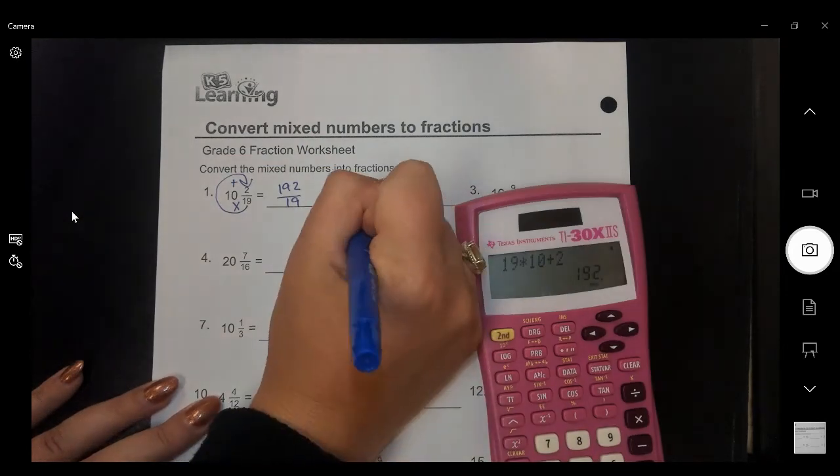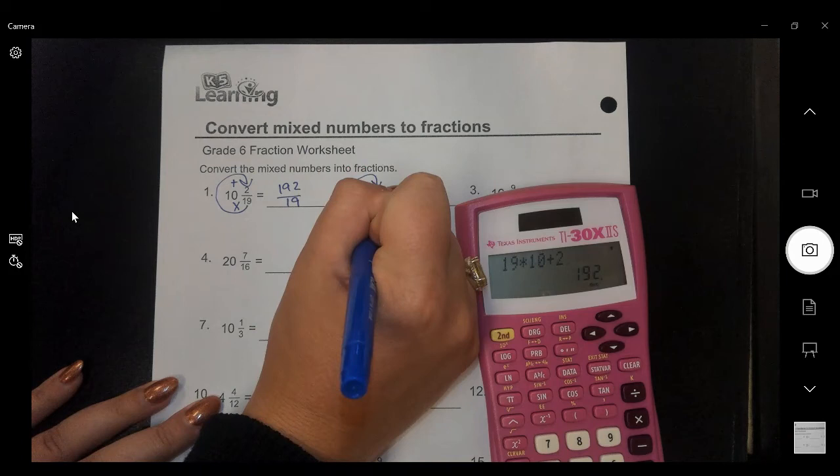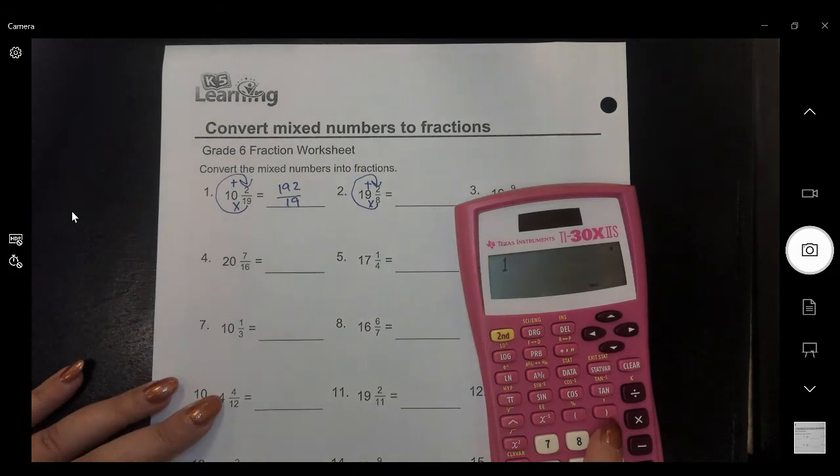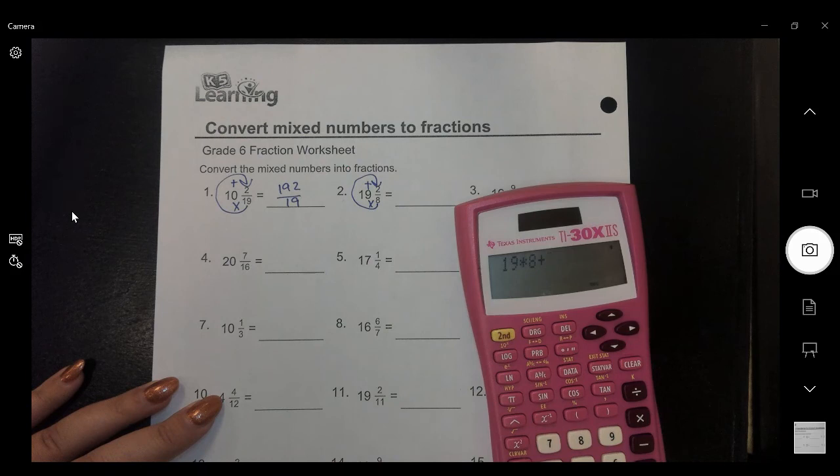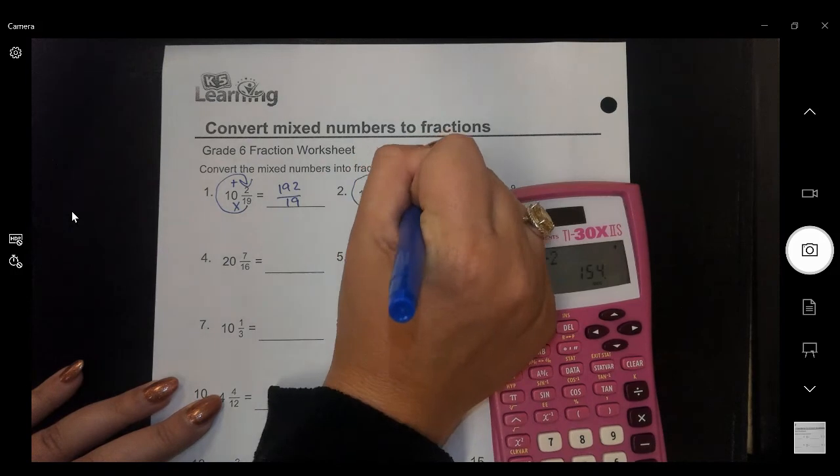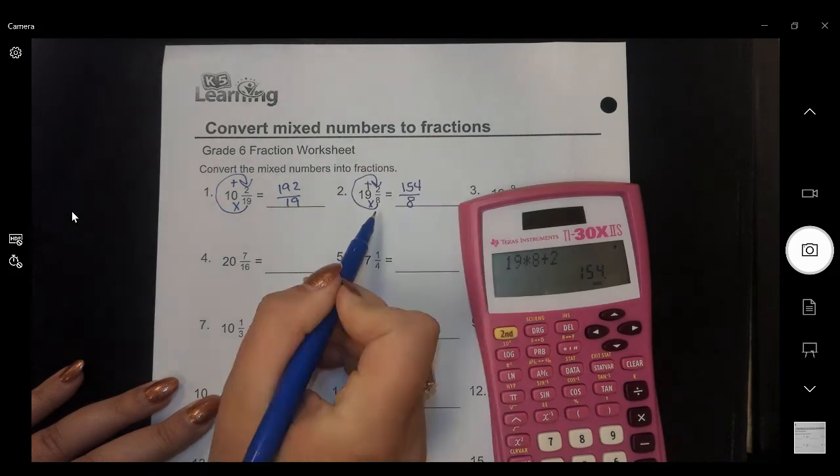So I'm going to do that one more time. Go around the world, multiply, then add. So 19 times 8 plus 2 equals 154. Keep the denominator the same.